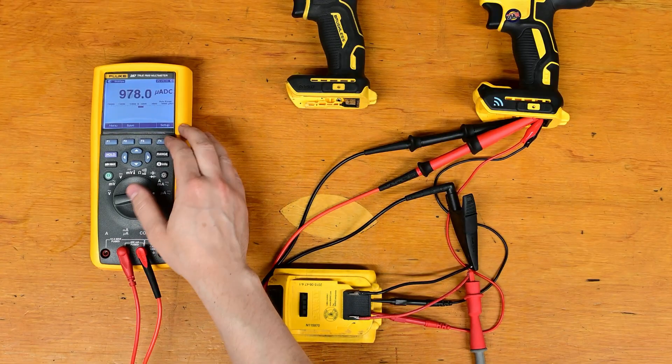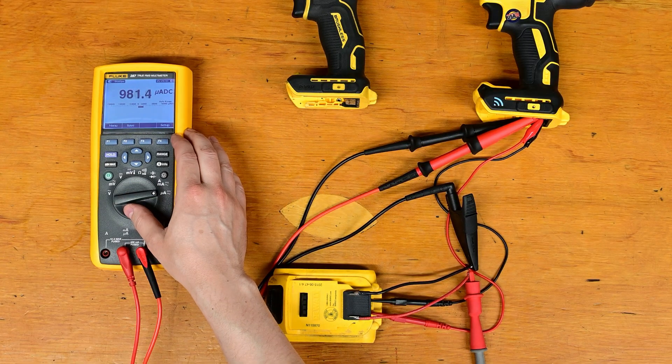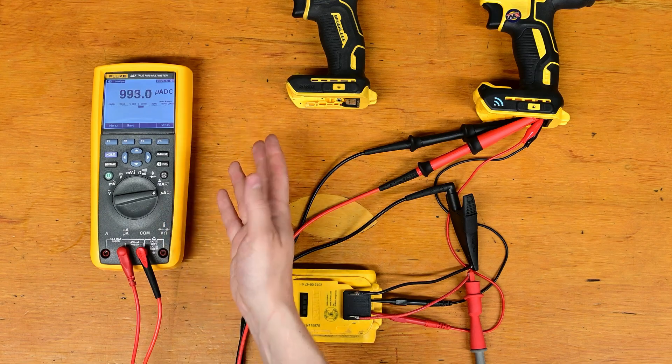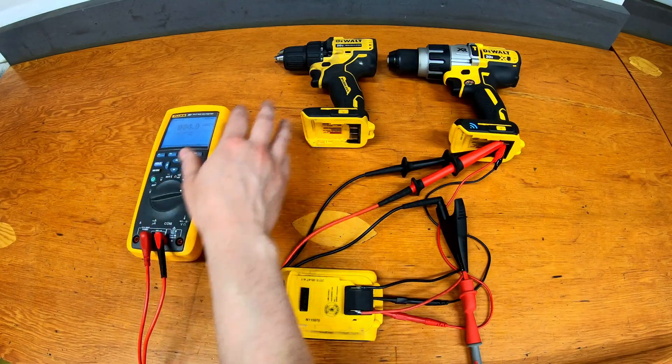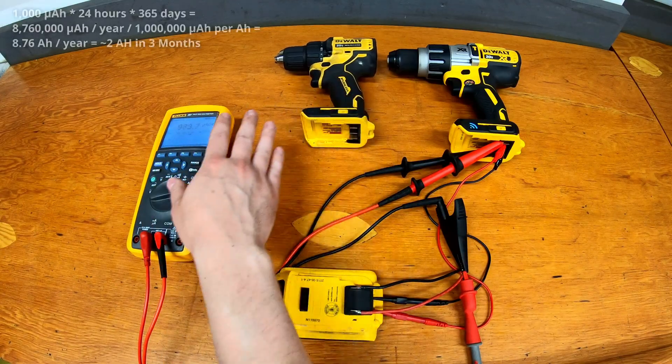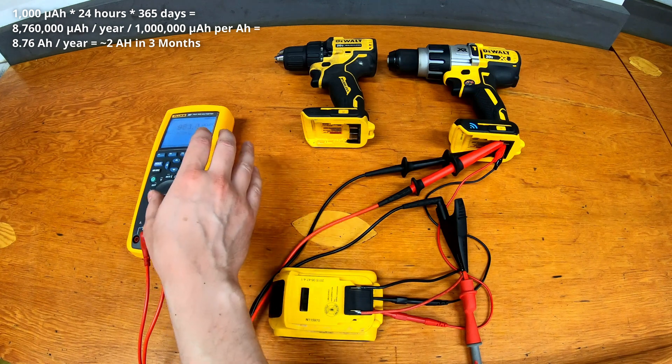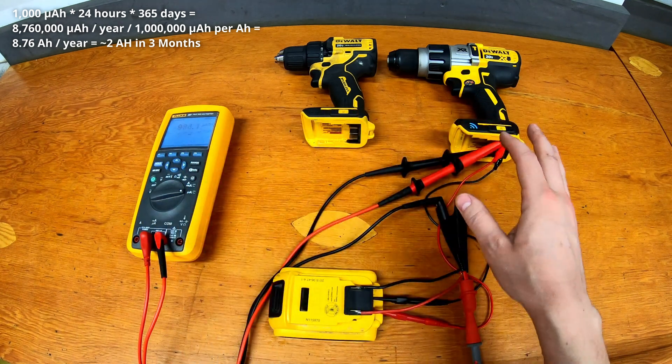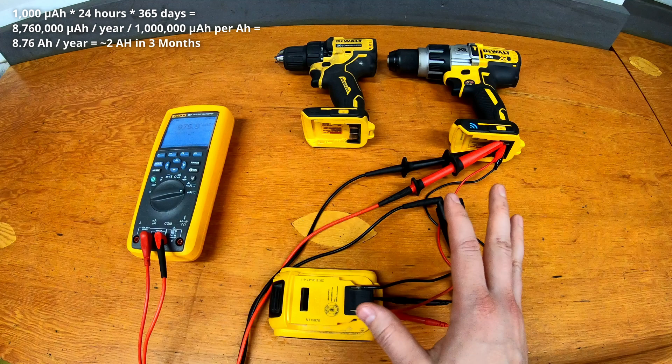Taking a look at the meter now we can see we're drawing right around a thousand microamps or about one milliamp. That's 400 times more than this tool is drawing and if you do the math on that this tool would actually drain the battery in around three months.